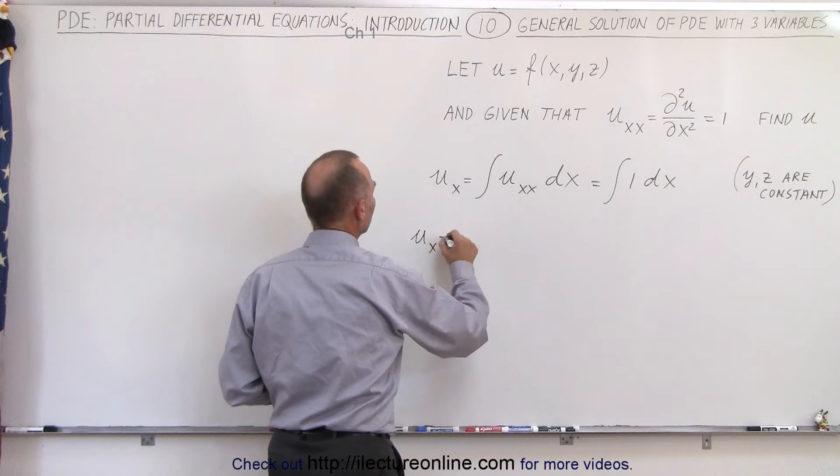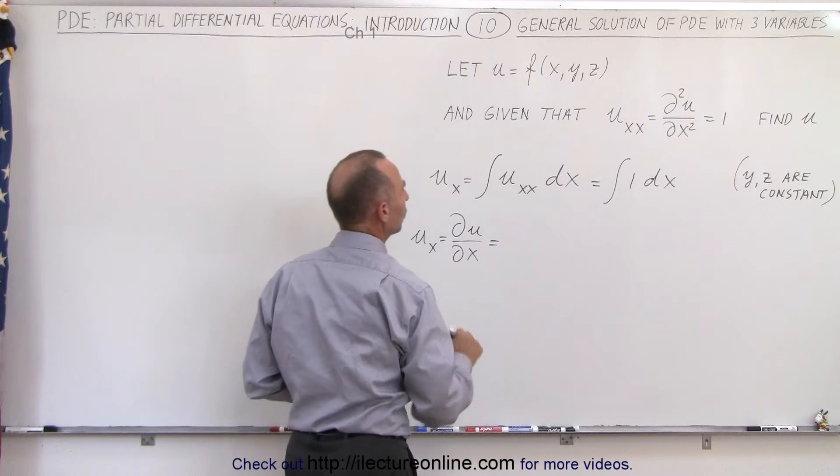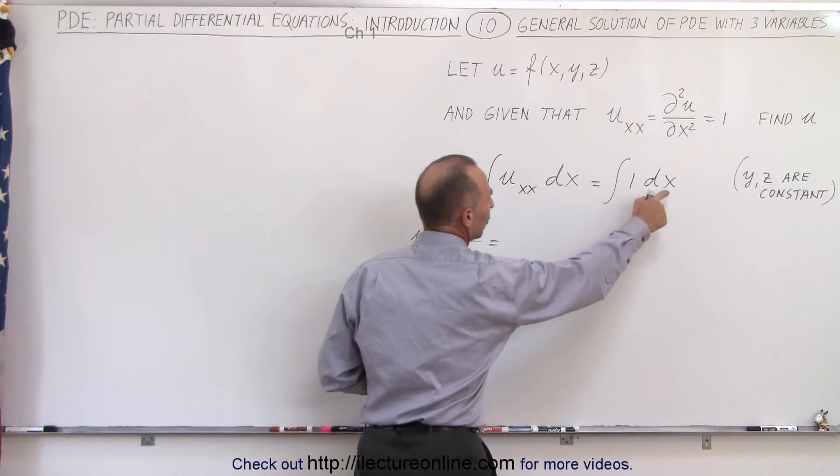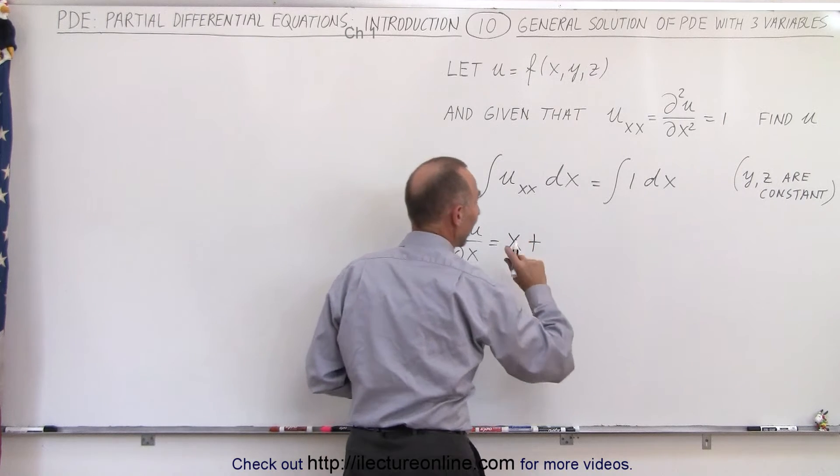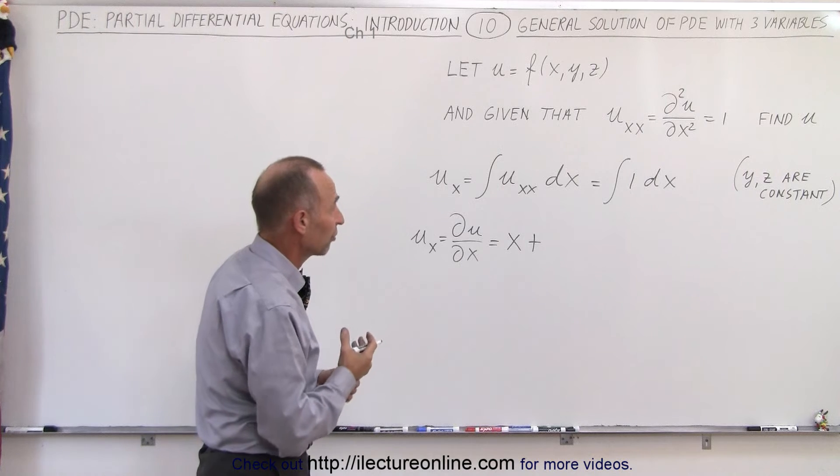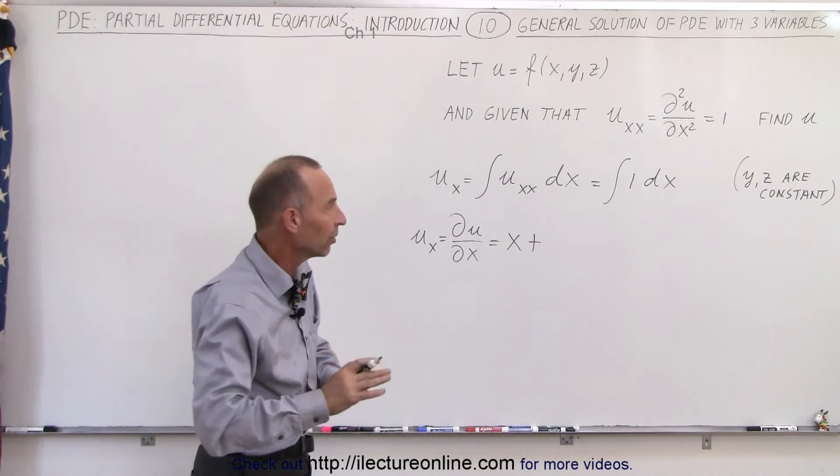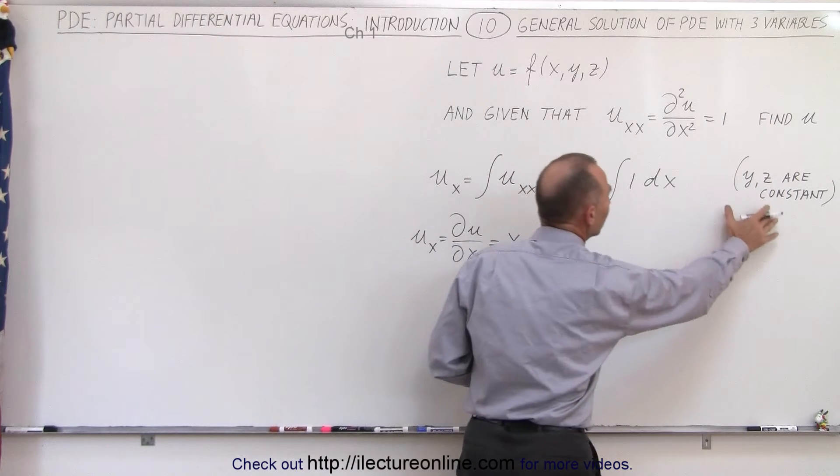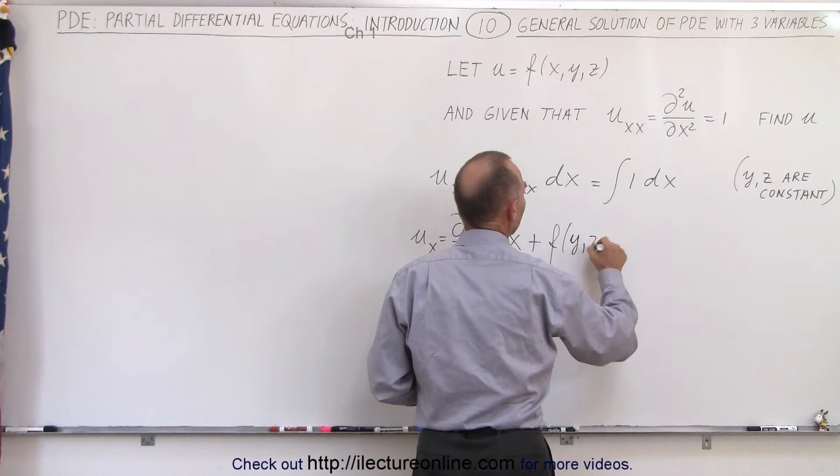u of x, which is equal to the partial of u with respect to x, is equal to the integral of 1 with respect to x, which is going to be x plus, and now, just like we add a constant of integration for normal differential equations, here we have to add a function of the variables that remain constant. In this case, both y and z are constant, so it's going to be a function of y and z.